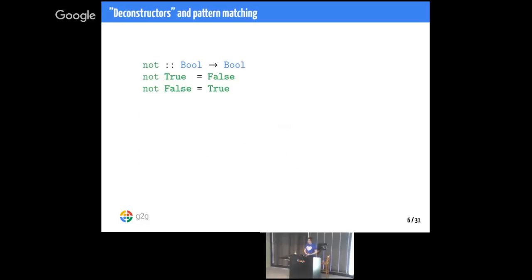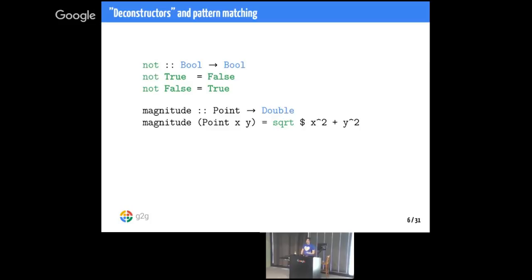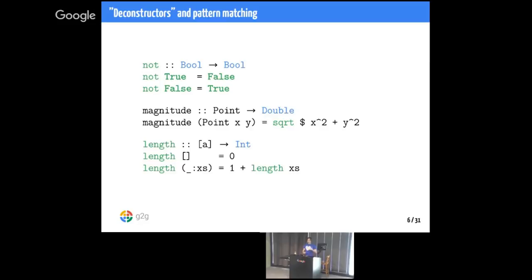We also saw how to declare our own functions. We give the type — which is optional because the compiler can usually figure it out, but it's good convention. We can use pattern matching: we write several implementations based on how the arguments were constructed. For Boolean there are only two constructors, so there are only two possible ways to implement not. We can use pattern matching to deconstruct values too — with Point, we can pattern match to get access to the x and y with which the point was constructed. And of course, lists are either the empty list or a cell containing a value followed by the rest of the list.